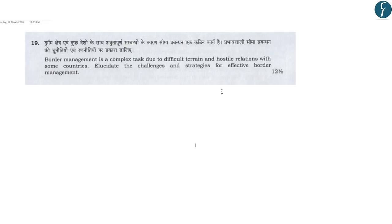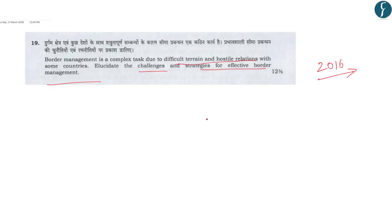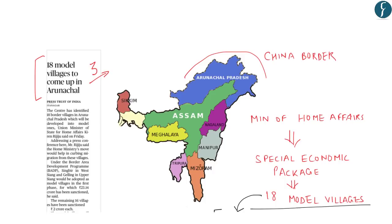The main objective of BADP is to meet the special needs of people living in remote and inaccessible areas situated near the border. A question on border management was asked in the Mains 2016 examination: 'Border management is a complex task due to difficult terrain and hostile relationships with some countries. Elucidate the challenges and strategies for effective border management.' The Border Area Development Program is an effective strategy for border management, and the special package for Arunachal Pradesh will further help in developing those difficult terrains.